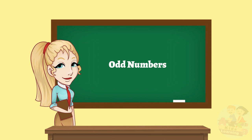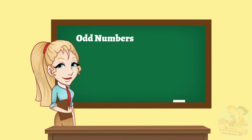Odd numbers are the numbers which are not divisible by 2. For example, 1, 3, 5, 7, and so on.